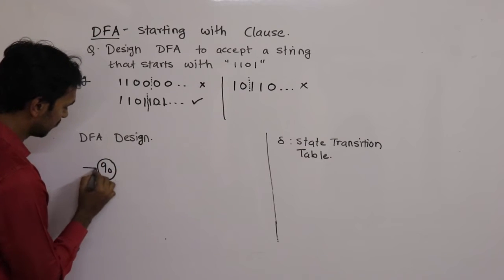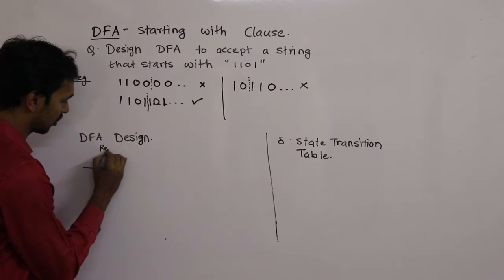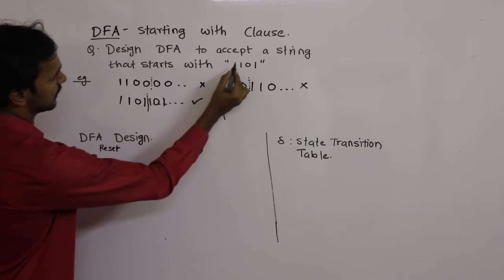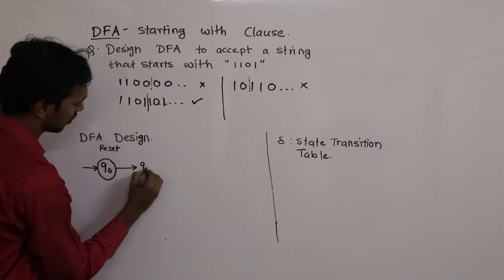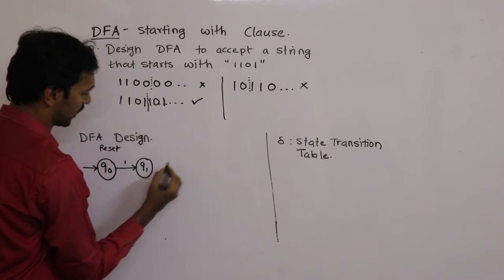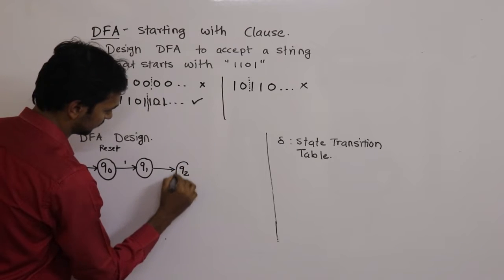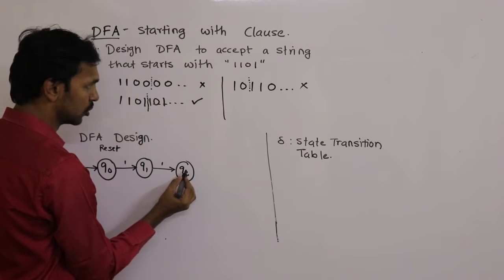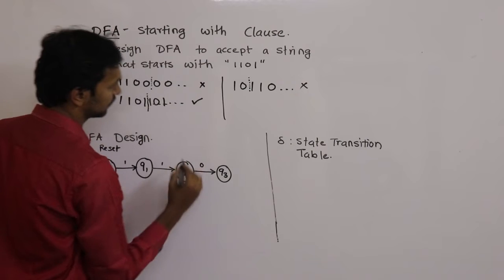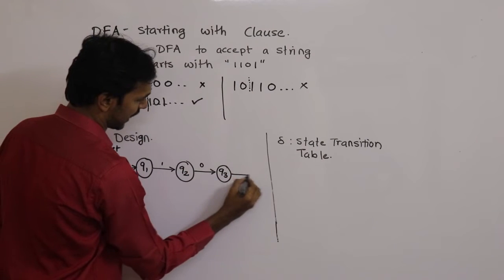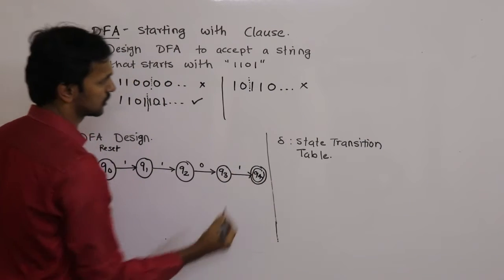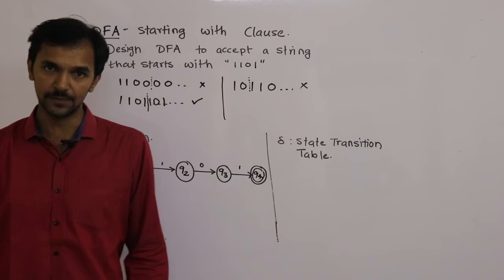We will design Q0 as the initial state, also called the reset state. It accepts the 1st bit as 1 and makes a transition to Q1. Q1 accepts the next correct bit, which is 1, and transitions to Q2. Q2 accepts 0 and transitions to Q3. Q3 accepts the last bit (1) and transitions to Q4. Q4 is drawn as two circles, indicating it is the final accepting state.